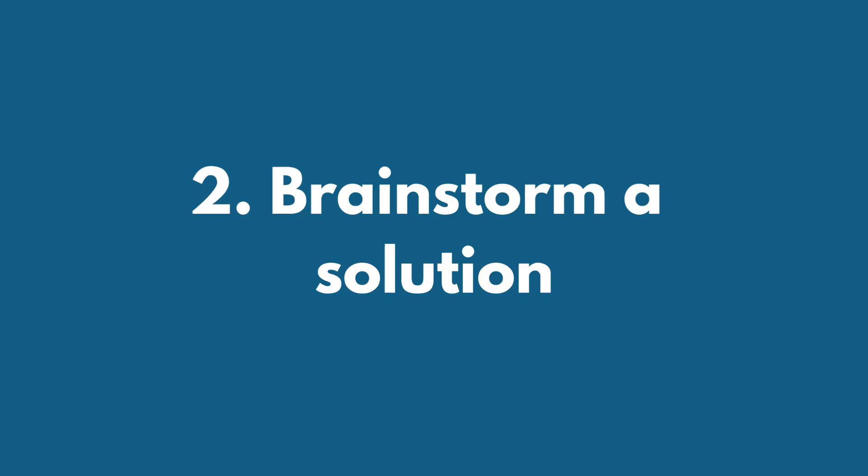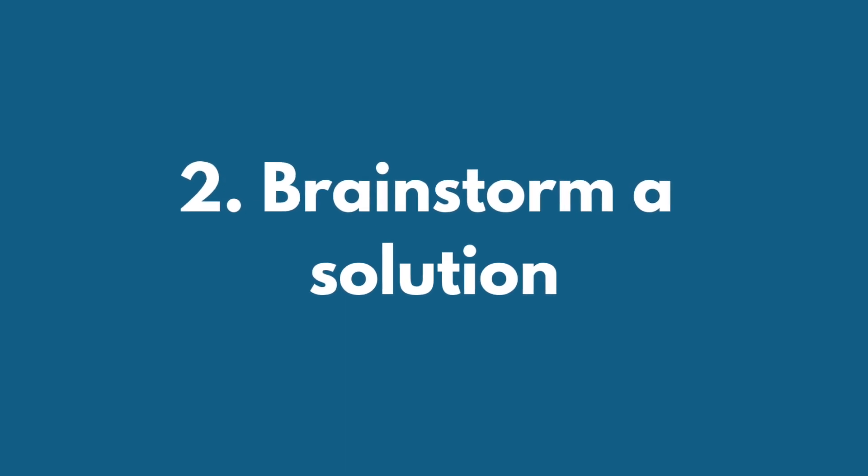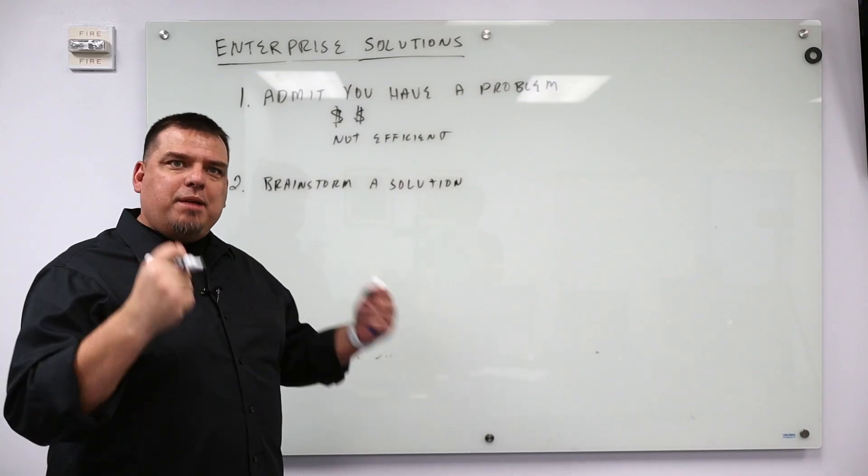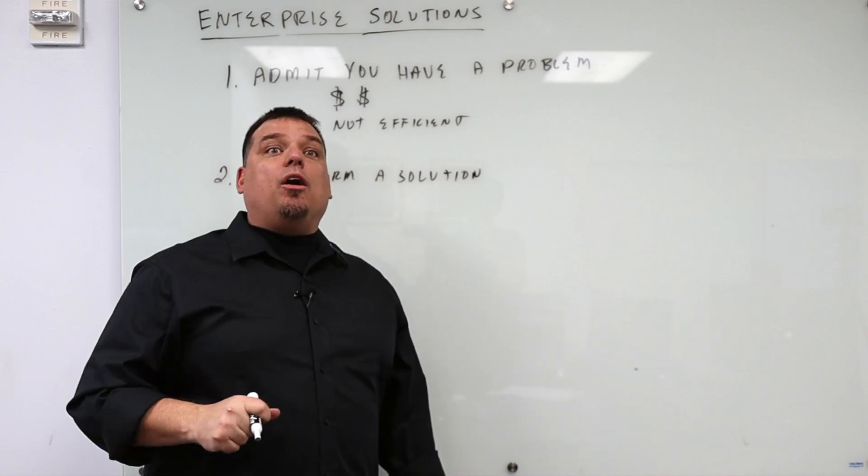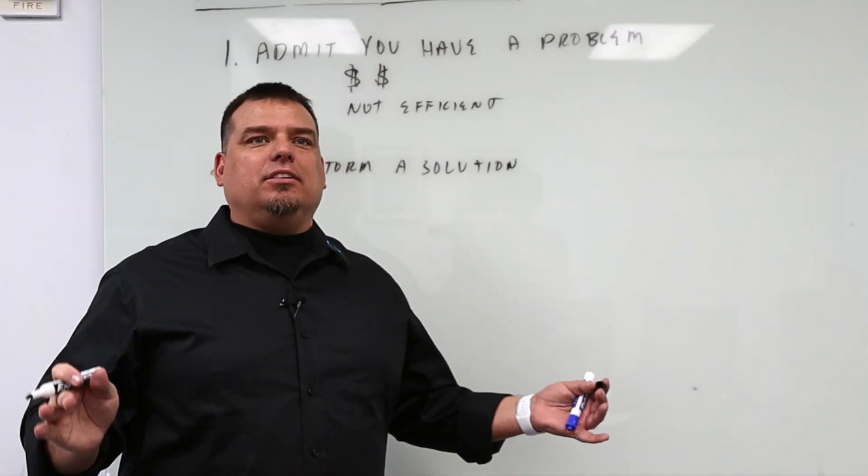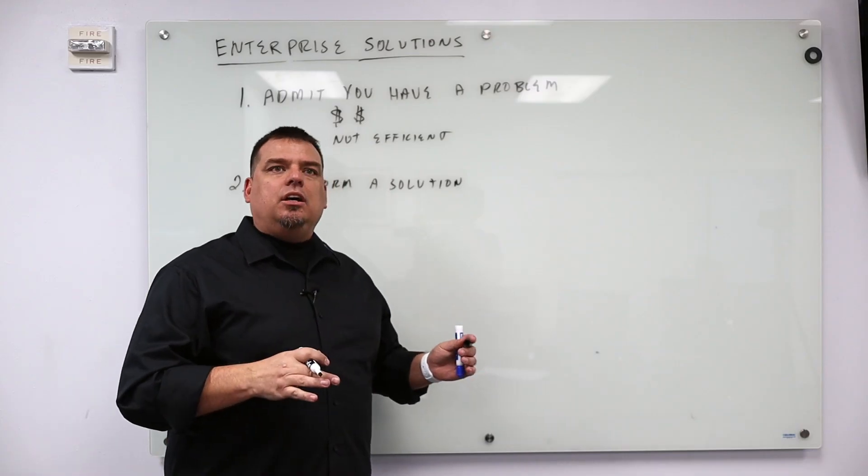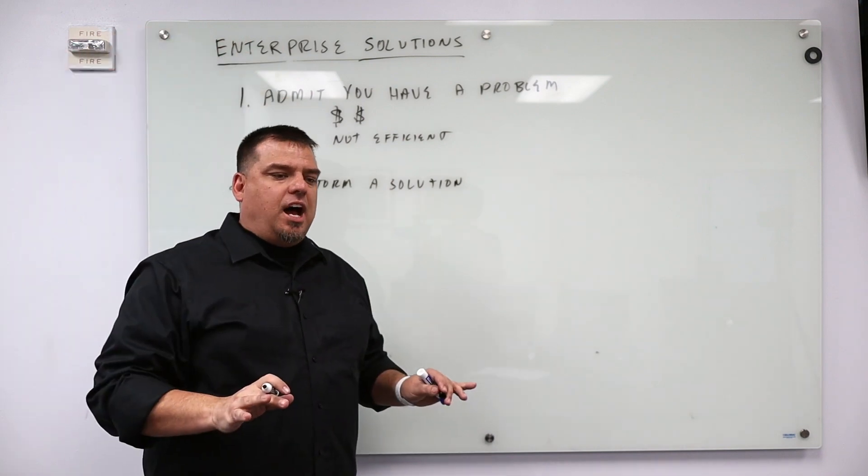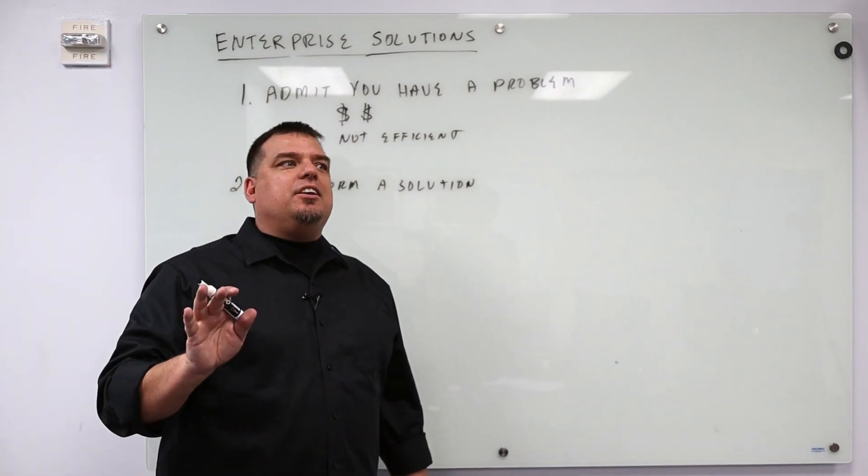Step number two, brainstorm a solution. What does that mean? Sit down in a room with a whiteboard and some markers and draw out what the ideal business model is. Don't build a business model, a new business model, based on what you know. Base it on your dreams.